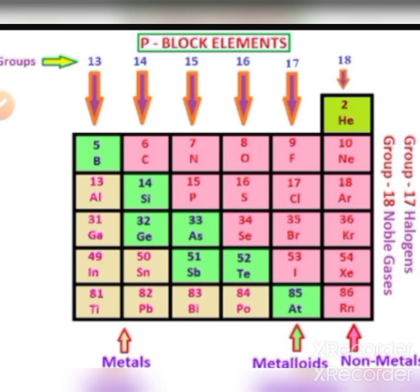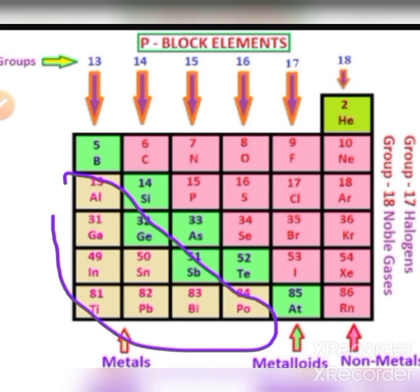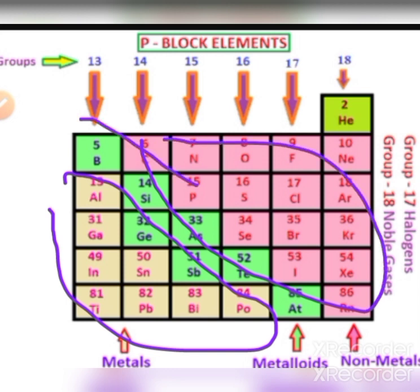The elements present in the lower part of the periodic table are called metals. The elements in the upper part are called non-metals. The middle part elements are called metalloids.